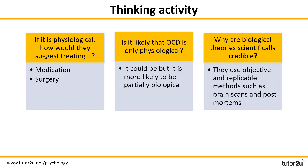So if OCD is physiological, how would the biological approach suggest treating it? Of course they would suggest some of the physiological methods of treating any condition — for example, medication, or surgery in some extreme cases. Is it likely that OCD is only physiological? Generally it could be just physiological, but it's also more likely to be partially biological, and if you know anything about the nature-nurture debate then this is a really good chance to have that discussion. Why are biological theories scientifically credible? They generally tend to use objective and replicable methods of investigation — for example, different types of brain scans and methods such as post-mortems, all of which are objective and remove subjectivity.